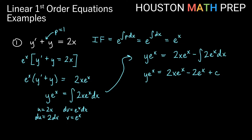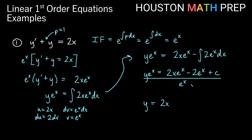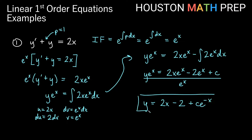Now we just need to divide everything by e to the x to solve for y. So y equals 2x — the exponential cancels in the first term — minus 2, it also cancels in the second term, and c divided by e to the x becomes c e to the negative x. That's our answer for the first example.